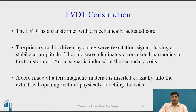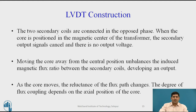Basically, the LVDT is a transformer with a mechanically actuated core. The primary coil is driven by a sine wave excitation signal of stabilized amplitude, which eliminates errors related to harmonics, and an AC signal is induced in the secondary coils. The core is typically a ferromagnetic material inserted coaxially into the cylindrical opening without physically touching the coils — so this is non-contact with no friction involved, which is one reason it gives very accurate measurements. Moving the core away from the central position unbalances the induced magnetic flux between the secondary coils and develops an output. As the core moves, the reluctance of the flux path changes, and the degree of flux coupling depends upon the axial position of the core, which is the displacement being measured.